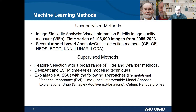We worked with a series composed of more than 96,000 images between 2009 and 2023. We applied different model-based anomaly and outlier detection methods, some of which are listed there. At the same time, we used a collection of supervised techniques, including feature selection with a broad repertoire of filter and wrapper methods. We used some modeling techniques using deep CNN, a certain kind of convolutional network, and also LSTM for modeling the time series. In addition, we have different techniques to understand the behavior of these models, including permutational variable importance, LIME (local interpretable model-agnostic explanation), and Shapley additive explanations (SHAP).